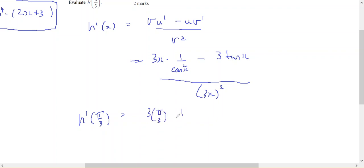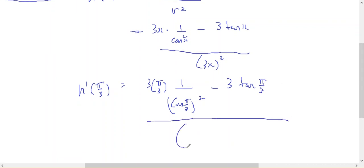1 on top of the cos of pi on 3 squared minus 3 times the tan of pi on 3, all over 3 times pi on 3 squared. So notice that my 3's cancel.